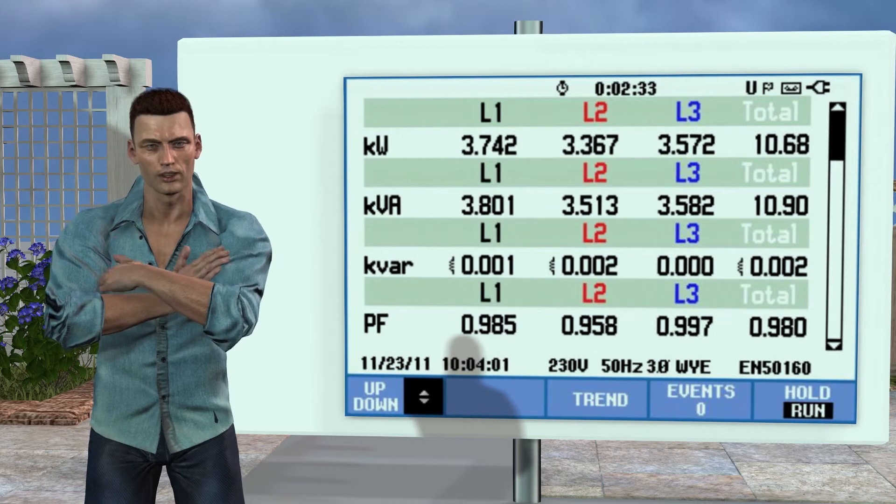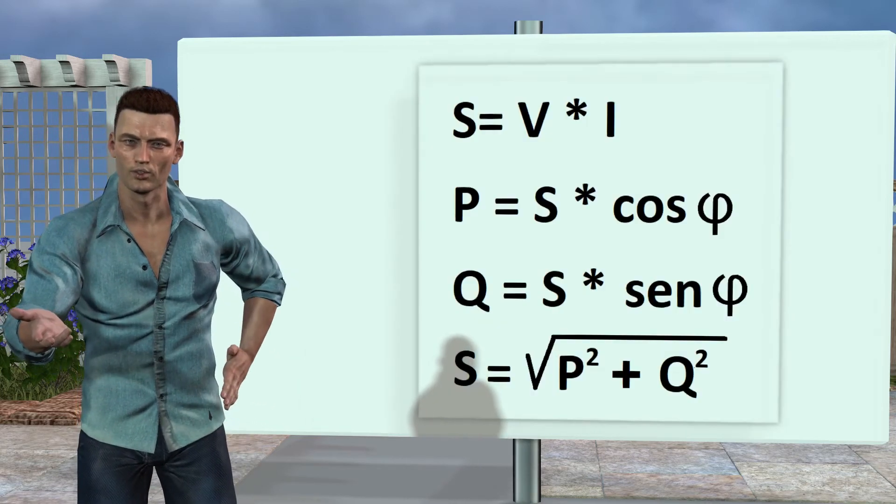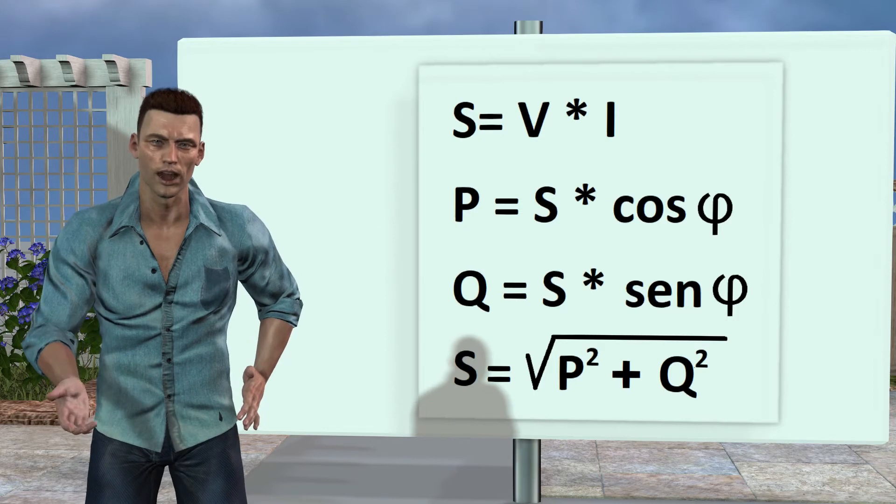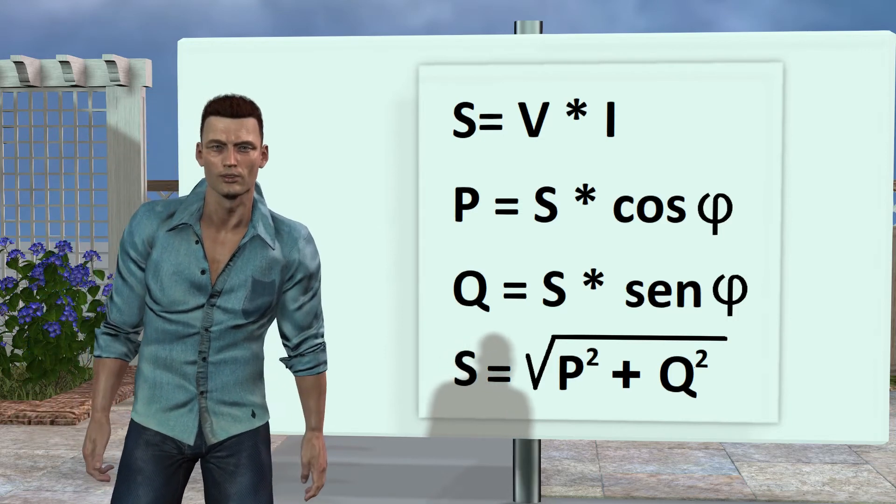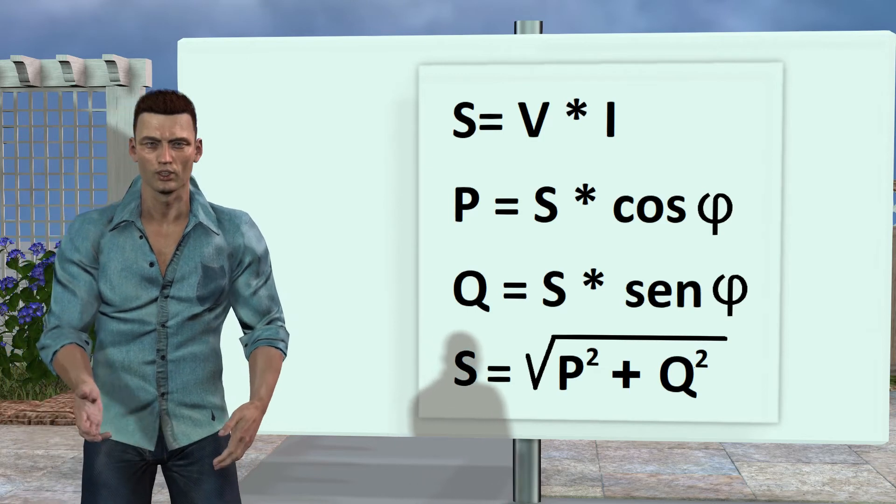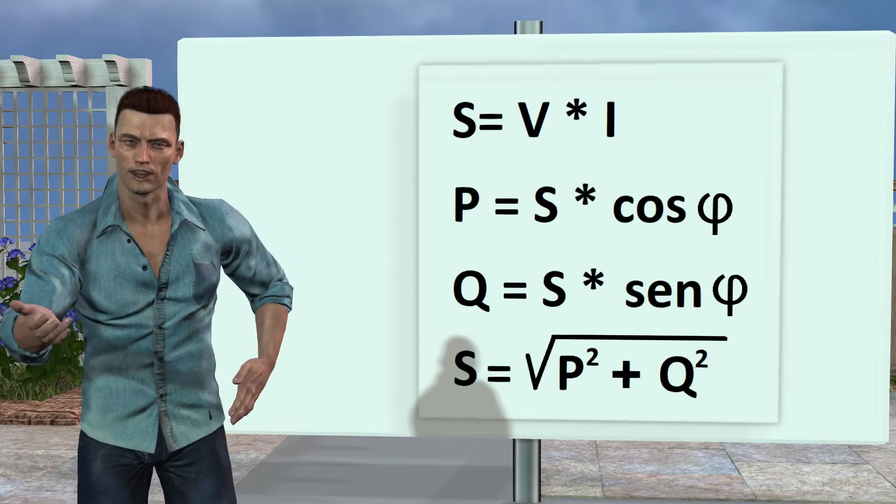For RMS values, we can obtain the following relationships involving voltages, currents and powers. The RMS apparent power is calculated just multiplying the RMS values of voltage and current. S equals VI.